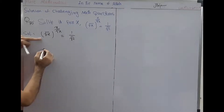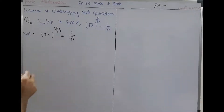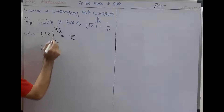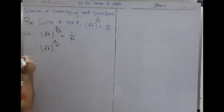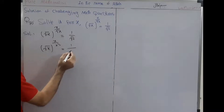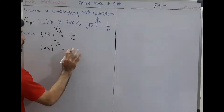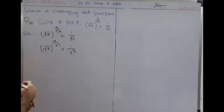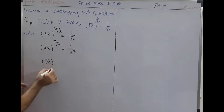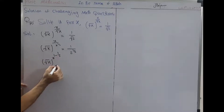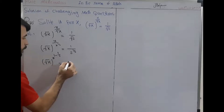We can write x to the power (square root of x), whole to the power x, and rewrite square root of x as x to the power 1/2. Using the power rule, this becomes x to the power (1 − 1/2 · 1/2), which equals 2 to the power (−1/2).